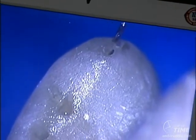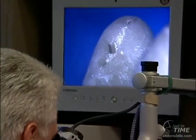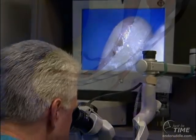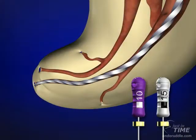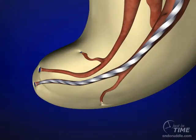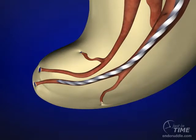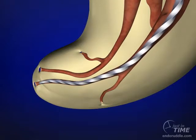We've talked about negotiating canals in other just-in-time shows, and you can imagine using tens and fifteen hand files in the presence of a viscous chelator to arrive perfectly at length. But once the instrument is at length, it means you have a pilot hole but it doesn't mean you have a reproducible glide path.